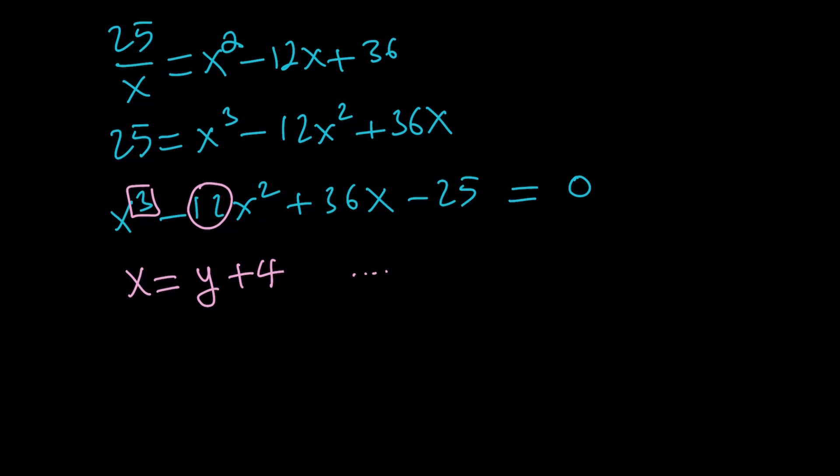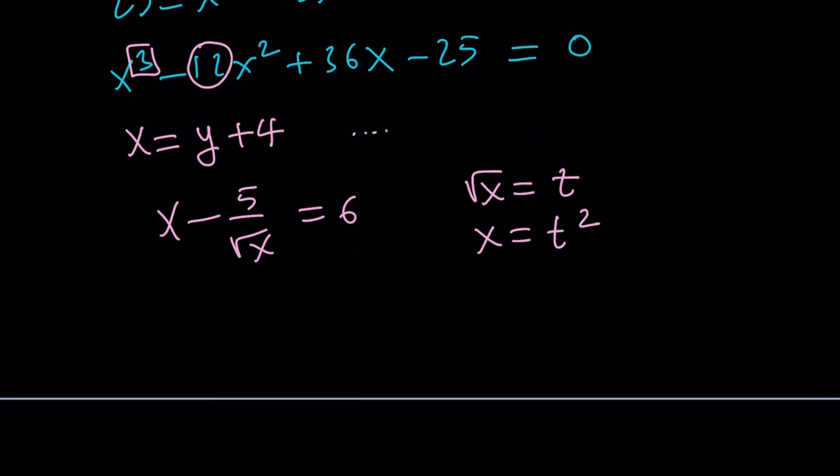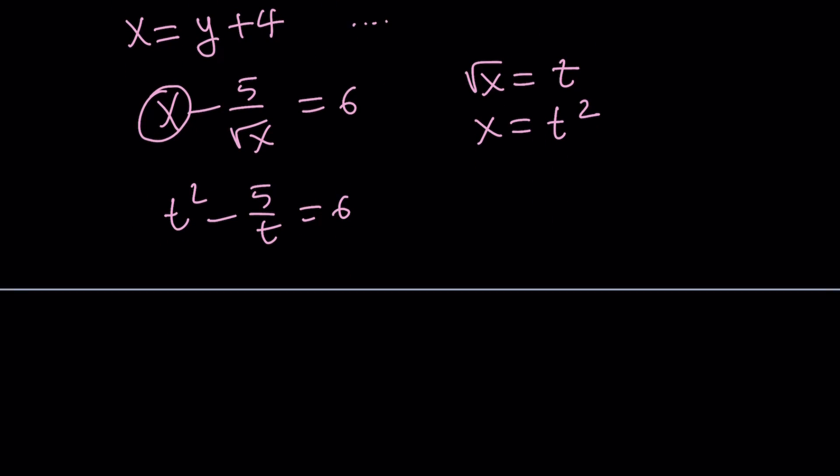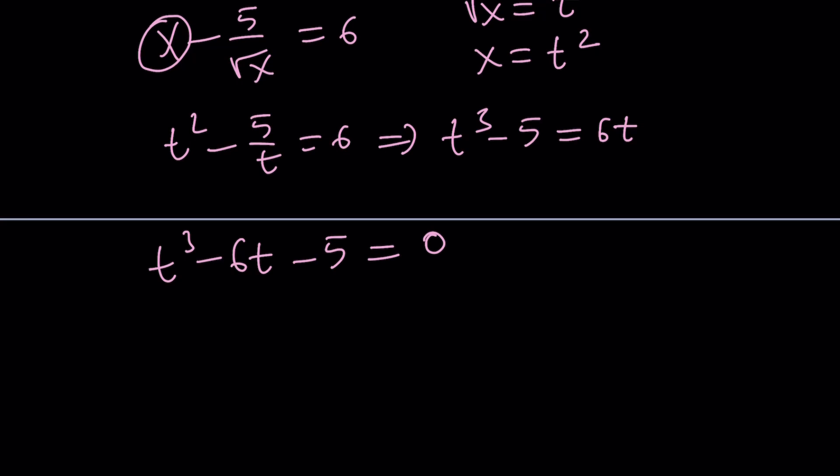But you can also approach it a little differently. What happens if square root of x is t, then x becomes t squared. And then this becomes t squared minus 5 over t equals 6. This kind of becomes an easier problem to deal with because if you multiply everything by t, you get t cubed minus 5 equals 6t. Why did this equation become all of a sudden easier? Because we did not isolate the radical. Instead we used substitution which is very powerful in most cases.